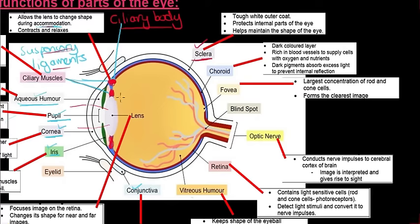The next portion is the sclera. If you look at somebody's eyes from the front, the white portion you see is the sclera — it goes around the eye completely. It is a tough white outer coat that protects the internal parts of the eye and helps maintain the round shape of the eye.